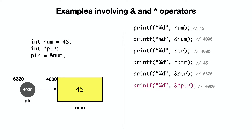For ampersand num: num has value 45, its address is 4000, so ampersand num outputs 4000. For asterisk ampersand num: the address of num is 4000, and the value pointed by that address is 45, so the output is 45. This means asterisk and ampersand are inverse operators — they cancel each other out. So asterisk ampersand num equals num, and ampersand asterisk ptr equals ptr.